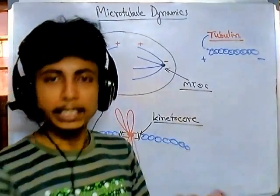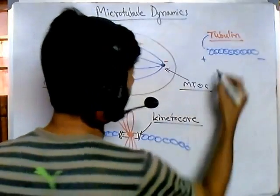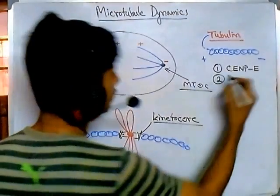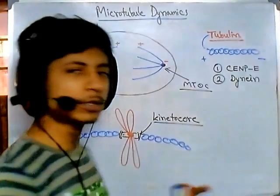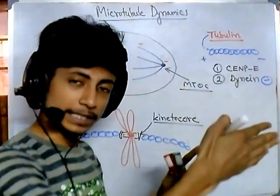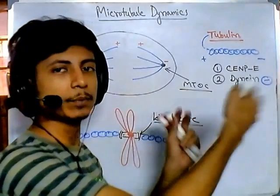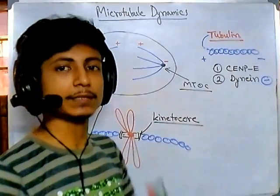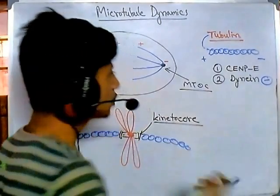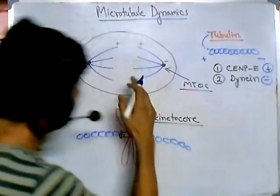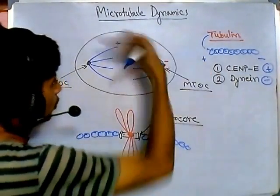Two types of motor proteins are used during cell division. One is called CENP-E, and another is dynein. There is also kinesin. Kinesin migrates towards the positive end and dynein migrates towards the negative end — always keep this in mind. Since dynein is itself moving towards the negative end, it is pulling things attached at the positive end. CENP-E moves towards the positive end, so it is pushing or pulling towards the negative end.